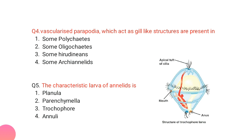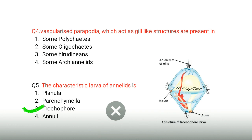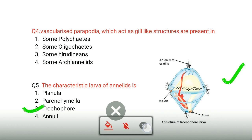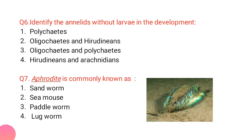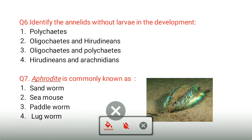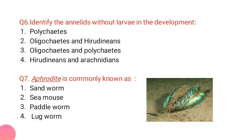The characteristic larva of annelids is the trochophore larva, and its diagram is shown here. The annelids without larva in development are the non-aquatic forms — larvae are present only in aquatic forms. The answer is Polychaeta, as they are the aquatic annelids.